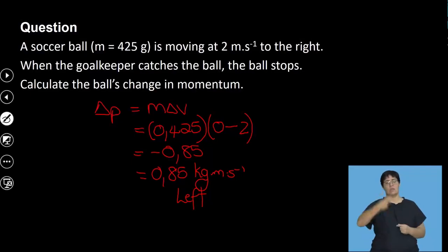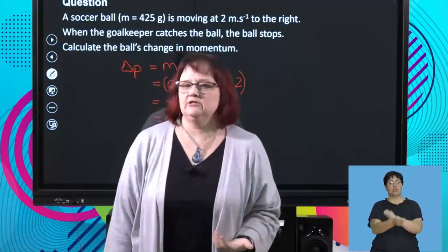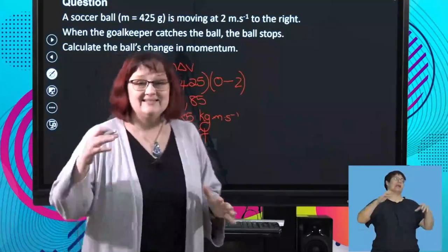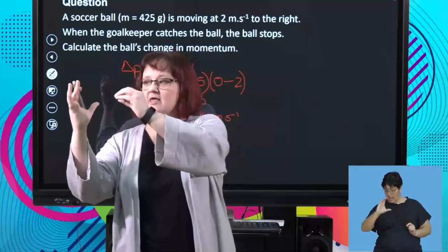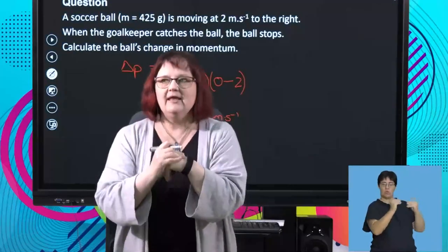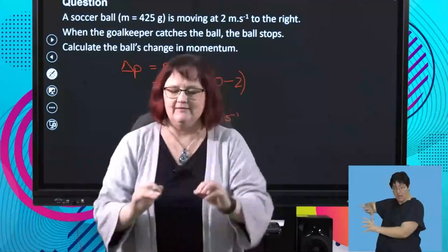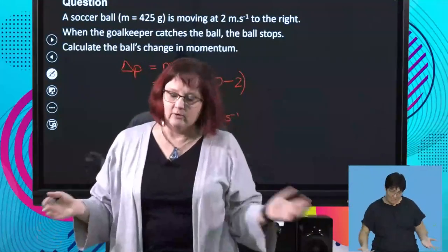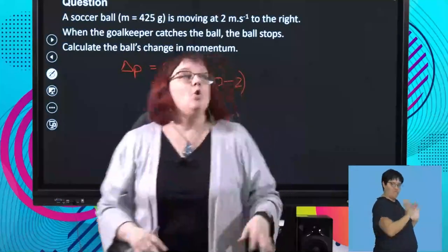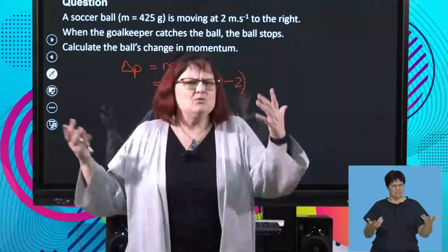We've done Newton's second law in terms of momentum. We also said that the net force would be in the same direction as the change in momentum. That means the net force acting on my ball must be to the left, which makes sense. The ball is going to the right. The goalkeeper catches the ball, so the goalkeeper must be exerting a force to the left to get it to stop. If the goalkeeper were pushing the ball to the right, the ball's not going to stop — it's going to go in the goal. We expected a bigger change in momentum because there was a bigger change in velocity.